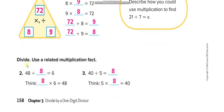Here you have to find the unknown in a division problem by thinking in multiplication. For 48 divided by what equals 6, think: 6 times what equals 48? Since 6 times 8 equals 48, the answer is 8. Similarly, for 40 divided by 5 equals what, think: 5 times what equals 40? Since 5 times 8 equals 40, the answer is 8.